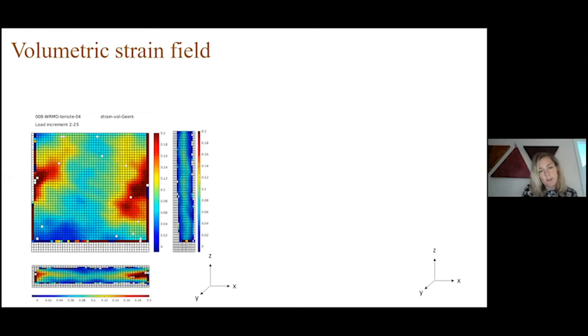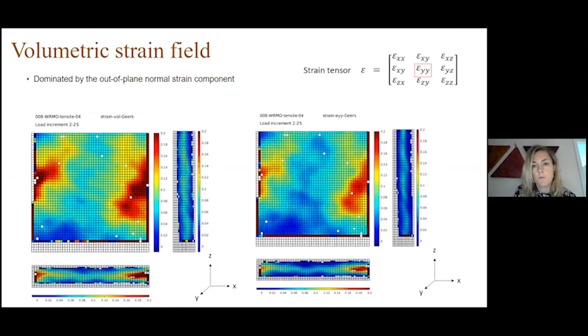The volumetric strain field can be compared to individual components. Here, for example, we have compared the volumetric strain fields with single components from the strain tensor. We see that the volumetric strain fields are dominated by the out-of-plane component, which represents a sample thickening. This component is not achievable with 2D strain field mapping. So extending the analysis to 3D helps us to get a much more complete picture of what happens in the sample.